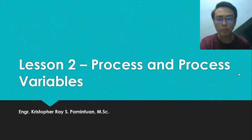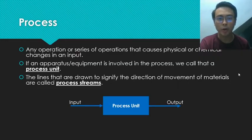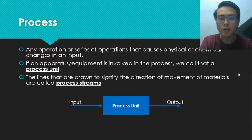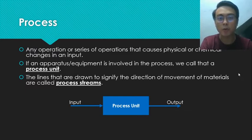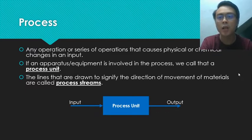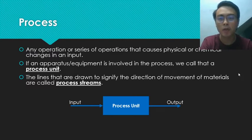To begin, let's first define what a process is. A process is any operation or series of operations that causes physical or chemical changes in an input. The main thing to remember is to not get confused between process and process units because there are very subtle differences. If an apparatus or equipment is involved in the process, then we call that a process unit. The process is the operation itself, while the process unit is the equipment or apparatus used to carry it out.